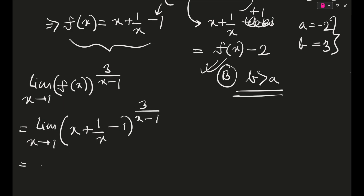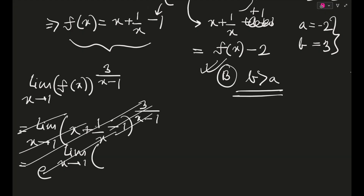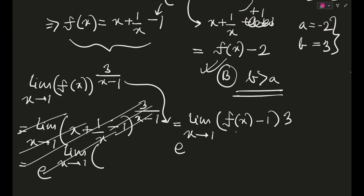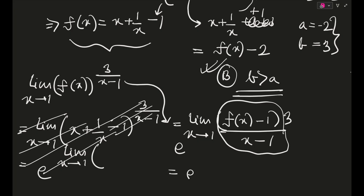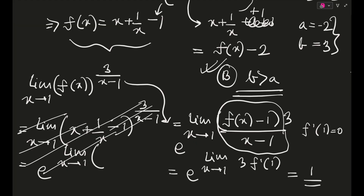This 1^∞ form equals e^(limit as x→1 of (f(x)−1) · 3/(x−1)). That circled part directly becomes 3·f′(1) by the definition of the derivative. Since f′(1) = 0, the result is e⁰ = 1. So option c is also correct, and the correct options are b and c.